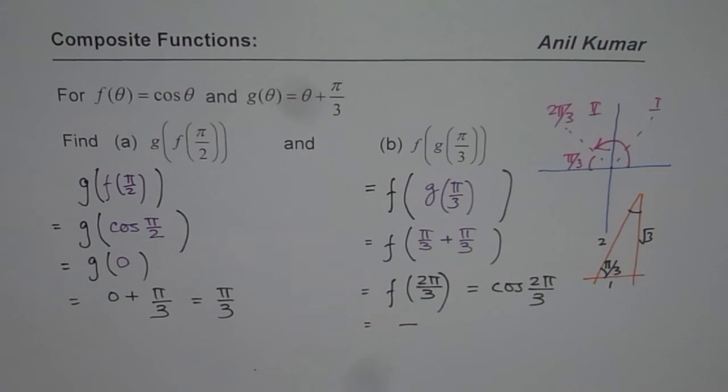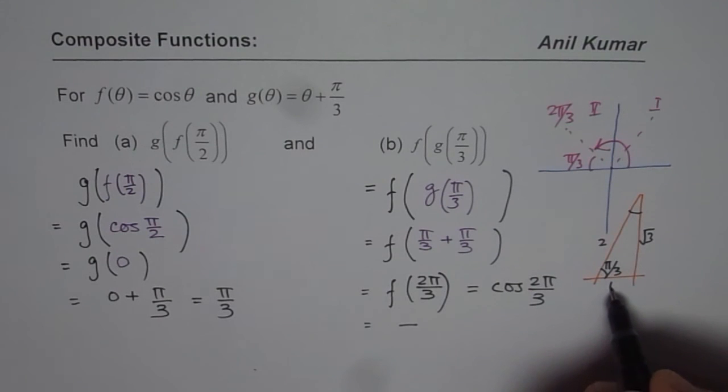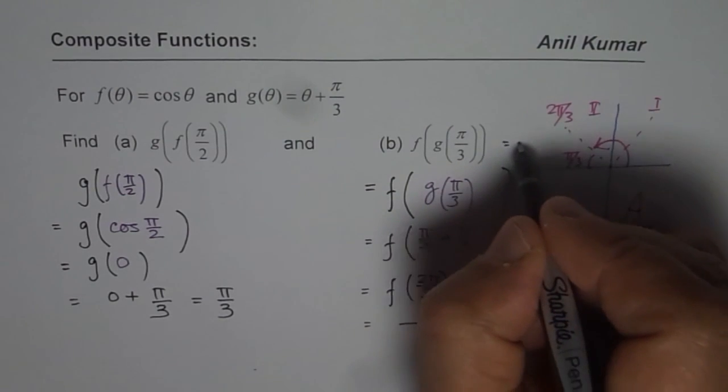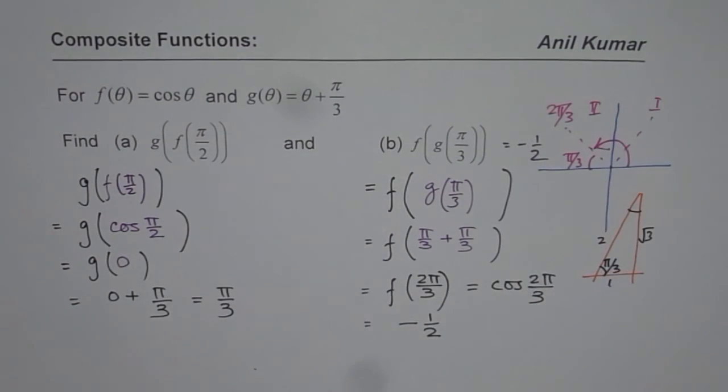Cosine is adjacent side over hypotenuse, so negative 1/2 is our answer. We get -1/2 as the solution for part (b). I hope that helps. Thank you and all the best.